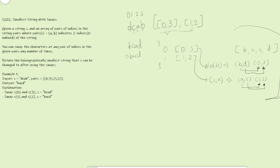To build this dictionary we can use Union-Find. We start with an array of parent nodes where each element is its own parent. Since we have four elements, the parents array starts as [0, 1, 2, 3], meaning index 0's parent is 0, index 1's parent is 1, and so on. We then run union on each pair from the input.